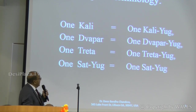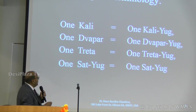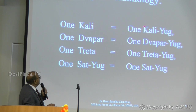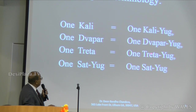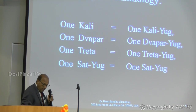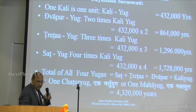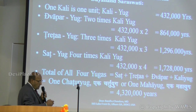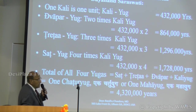The calculation goes like this: one Kali, then times two Kali is Dwapar Yuga, times three is Treta Yuga, and Sat Yuga is times four of the Kali. Now one Kali has 432,000 years.